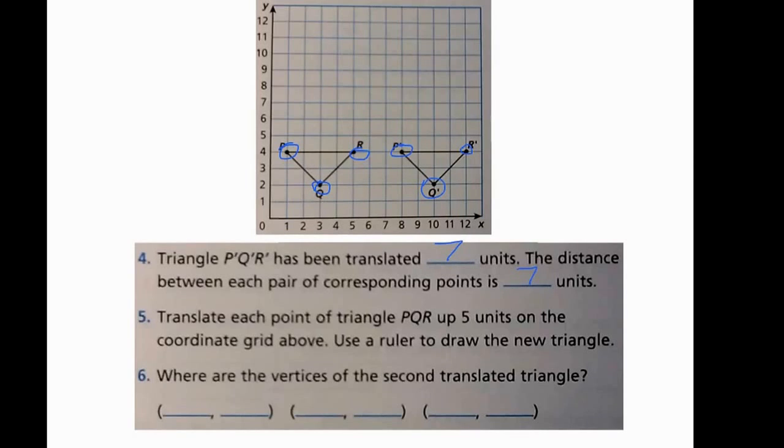Now, for number 5, it wants us to translate each point of triangle PQR up 5 units on the coordinate grid above. So remember, translate is a slide, so that just means we're going to move it up. Okay, now it specifically said up 5 points, so I'm going to start with point P. If I'm going to move that up 5 units, well, it's at 4 right now. Remember, we're moving up on the y-axis. So that means our new point P would be at the 9 on the y-axis.